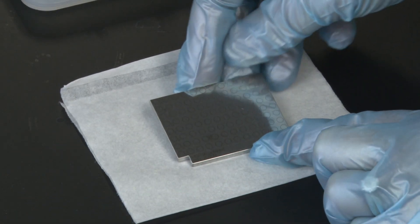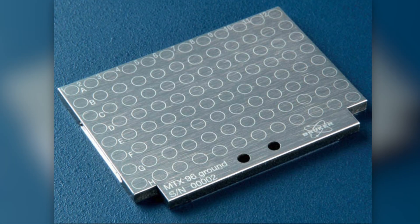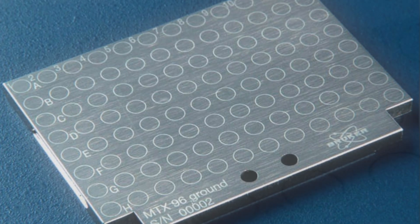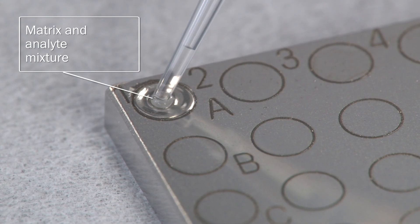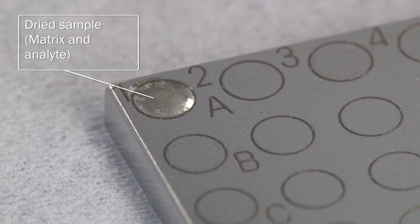Solutions of the matrix and analyte are deposited onto a sample plate known as the target. The target can be made of polished or ground stainless steel and has spots for several different samples to be applied. The solvent is allowed to evaporate from the sample solution, leaving behind a solid sample spot on the target that will be analyzed by the MALDI-TOF spectrometer.